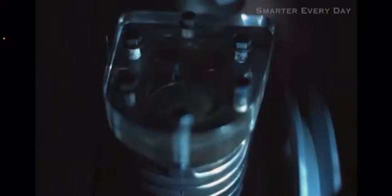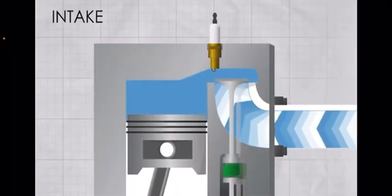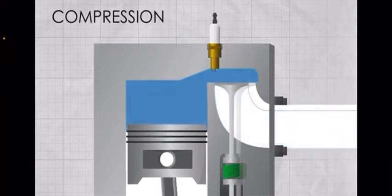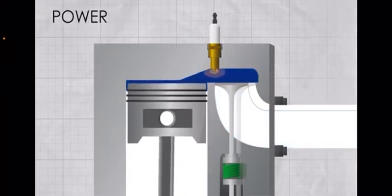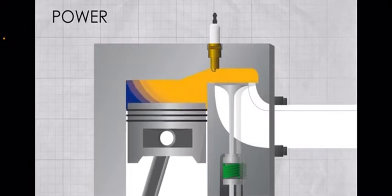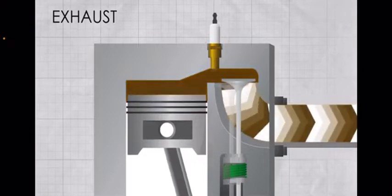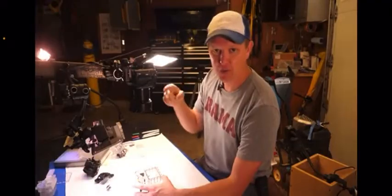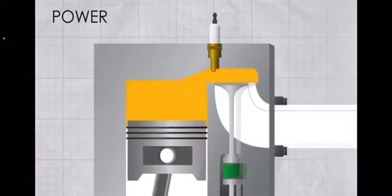On an earlier episode of Smarter Every Day, I described a see-through engine where we saw combustion inside the cylinder. Basically, there are four strokes to a four-stroke engine. You have the intake stroke, pulling in fuel-air mixture into the cylinder. Then the compression stroke compresses the fuel-air mixture, followed by ignition at the spark plug, creating the power stroke driving down the piston. Then the valve opens and you push out the exhaust, starting the cycle again: intake, compression, power, exhaust.